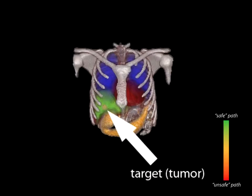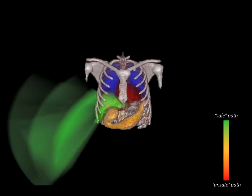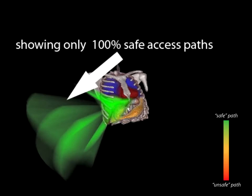In 3D, a simple one-dimensional transfer function is sufficient to control the visualization of the path safety volumes. This example shows only paths which reach 100% of the tumor volume.